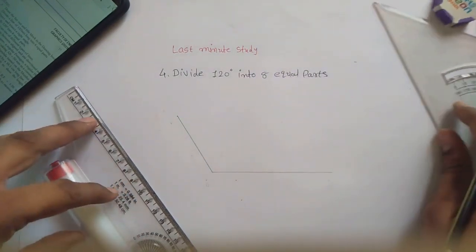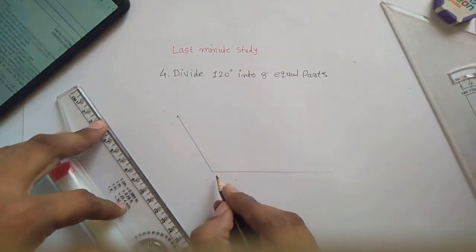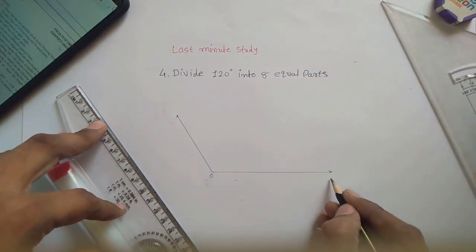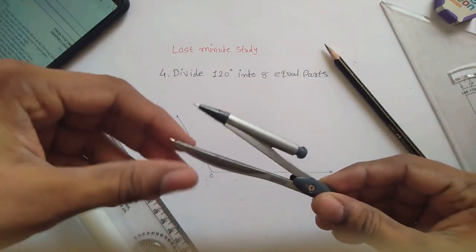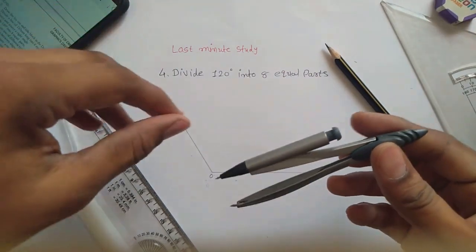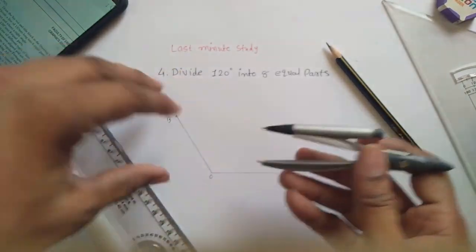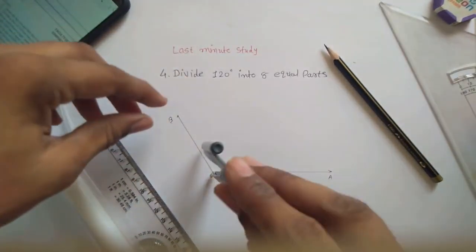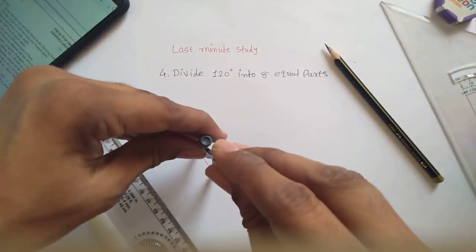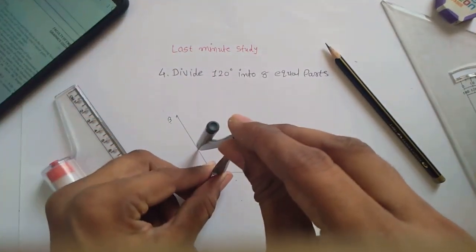Now give names to them: this is origin O, this is A, and this is B. Now using the same method which we follow for bisection, you have to construct a curvature with a random distance like this.